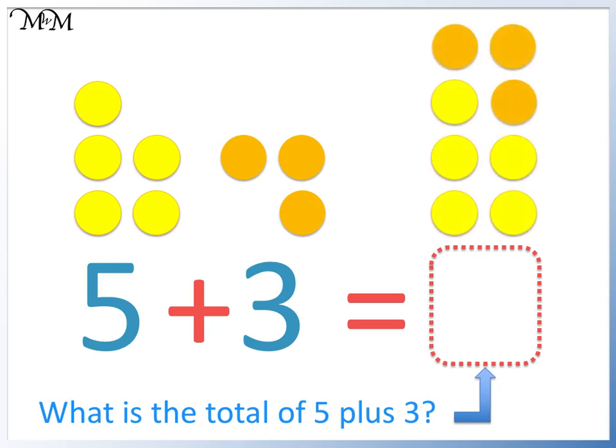Altogether we have 1, 2, 3, 4, 5, 6, 7, 8. So 8 goes in the box.